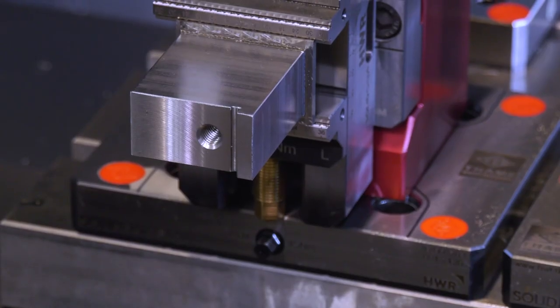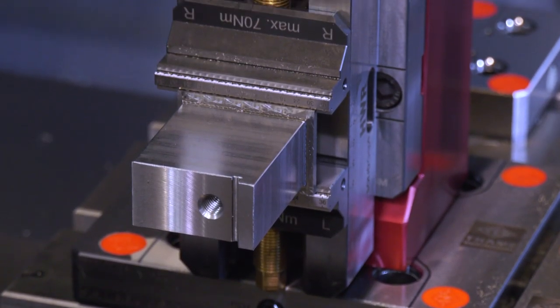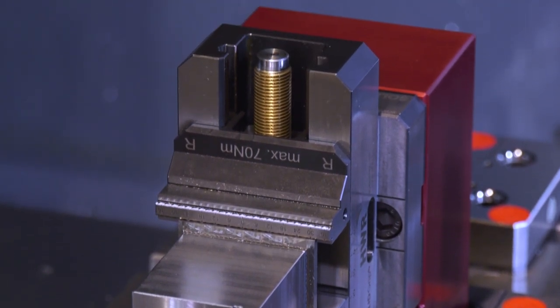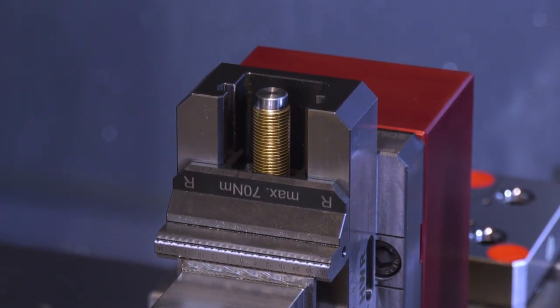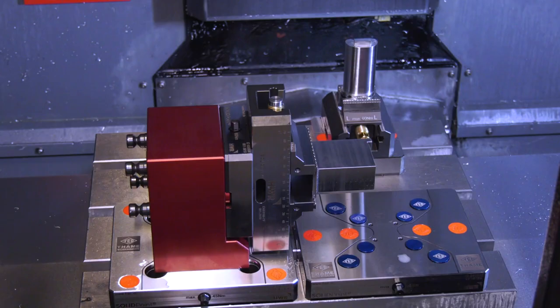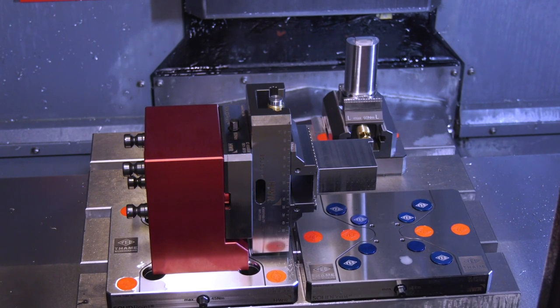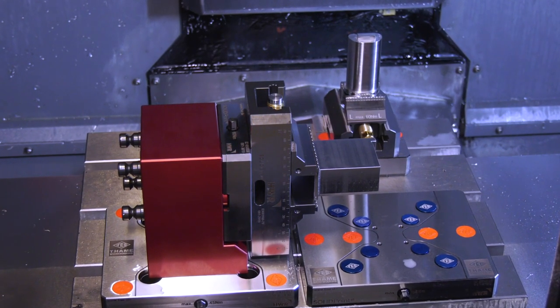Very flexible, very modular. We have some plates now that have 52 and 96 centers in the same plate. So when you're swapping from a small vise to a large vise, it's much quicker on the setup. It accommodates both versions.